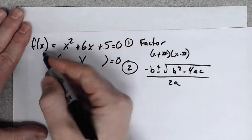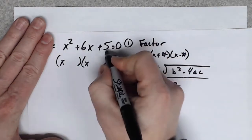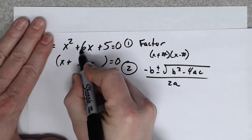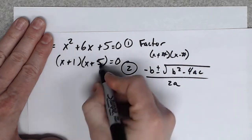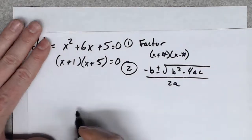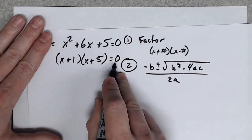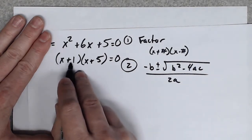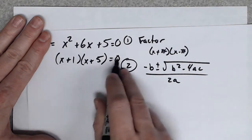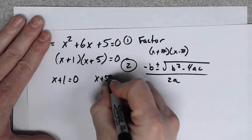Set the equation equal to zero. We need two numbers that multiply to give 5 and add to give 6. Both must be positive to give a positive product — 1 and 5 work: 1 times 5 is 5, and 1 plus 5 is 6. So we factor as (x + 1)(x + 5) equals zero. Now, what values of x make this zero? If x equals negative 1, then negative 1 plus 1 is 0, and zero times anything is zero. If x equals negative 5, then negative 5 plus 5 is 0 — same reasoning. You can also just set each factor equal to zero.